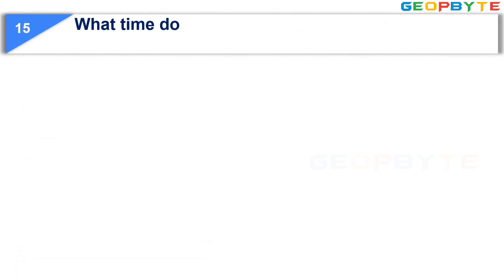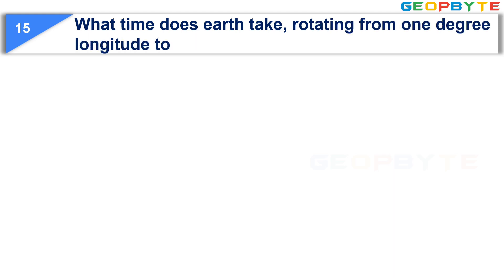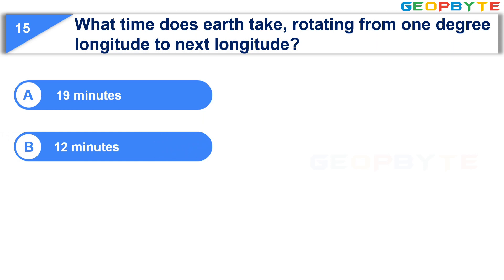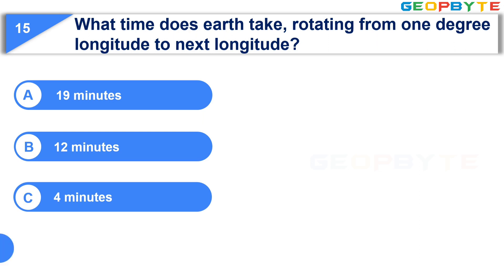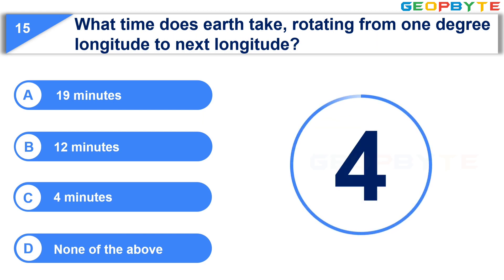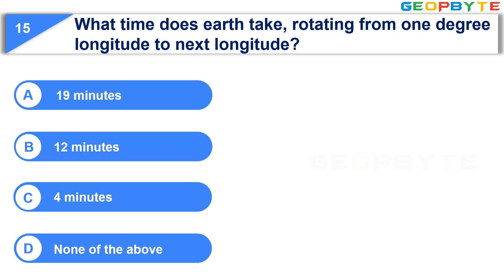The next question is: what time does the Earth take rotating from one degree longitude to the next longitude? Option A: 19 minutes. Option B: 12 minutes. Option C: 4 minutes. Option D: None of the above. Your time starts now. Your time is up and the correct answer is Option C: 4 minutes.